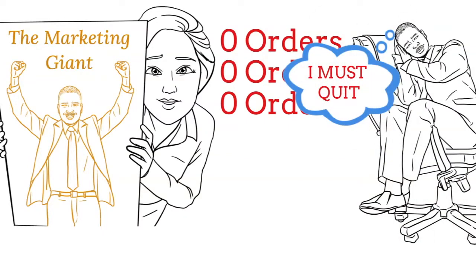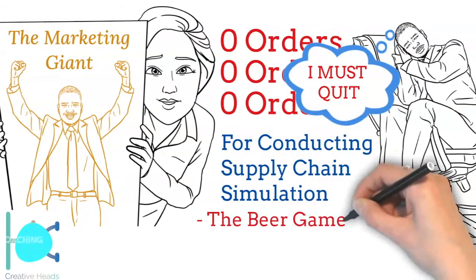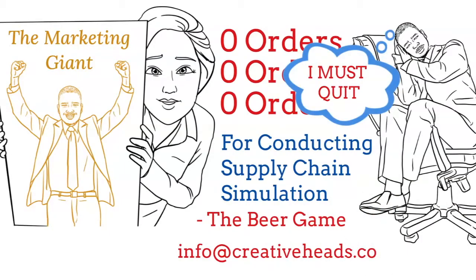To learn what happens further at the factory, whether the new marketing manager resigns and what he does next to manage the situation, or for conducting this supply chain simulation popularly known as the beer game, so that your managers and supervisors can learn how to best manage their production and supply chain, write to us at info at creativeheads.co.